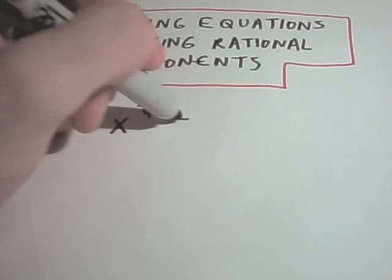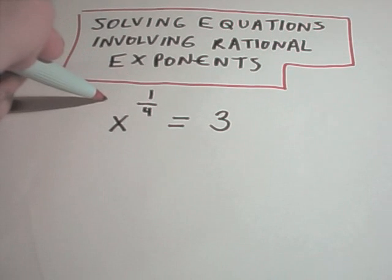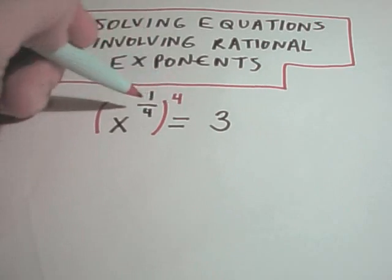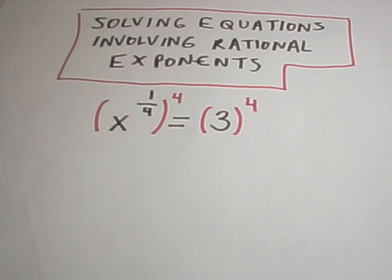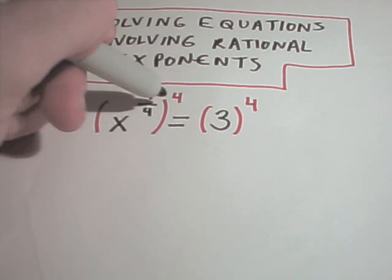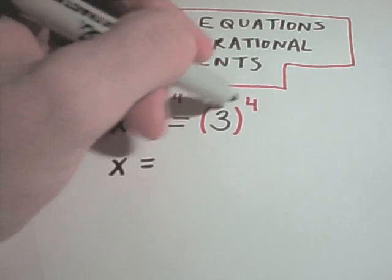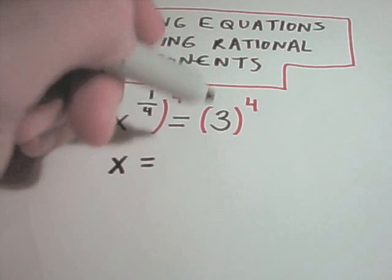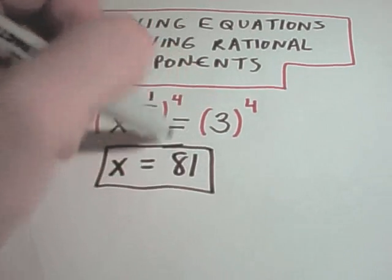Suppose I want to solve x to the 1/4th equal to 3. Just like with a normal linear equation, you want to get it down to x to the 1st power. The way I'm going to do that is raise both sides to the 4th power. Remember, if you have things in parentheses, you multiply them — 1/4 times 4 gives me x to the 1st. 3 to the 4th is 3 times 3 times 3 times 3, which gives us x equals 81 as our solution.